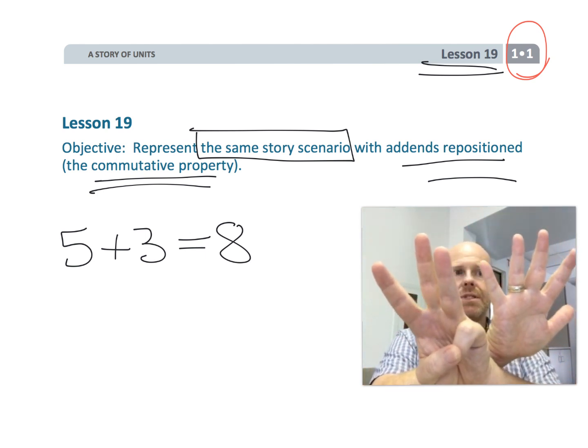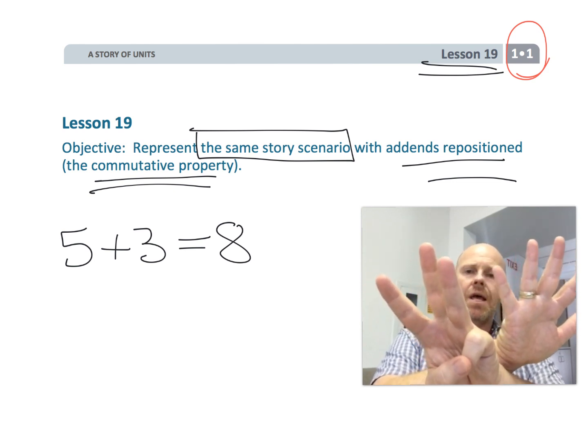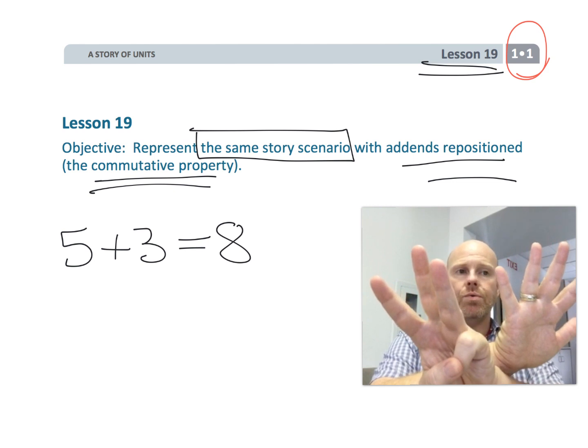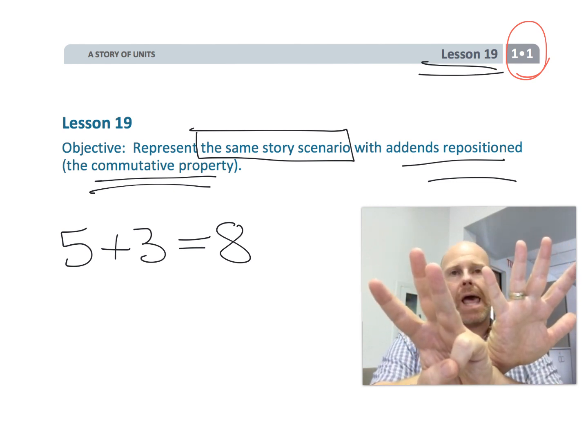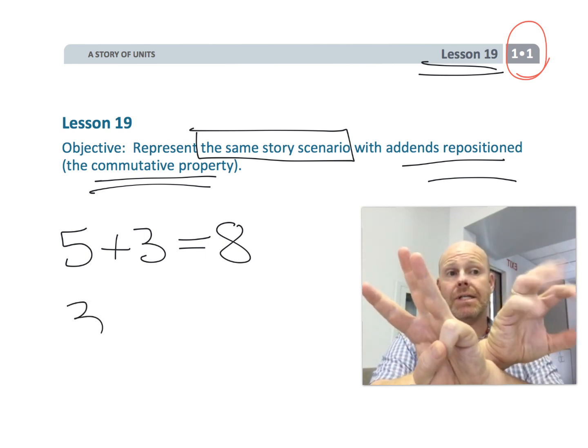do we still have eight fingers? Well, the answer is yeah, we still have eight fingers. What can be our new numerical expression or our equation? Well, now it could be three plus five.